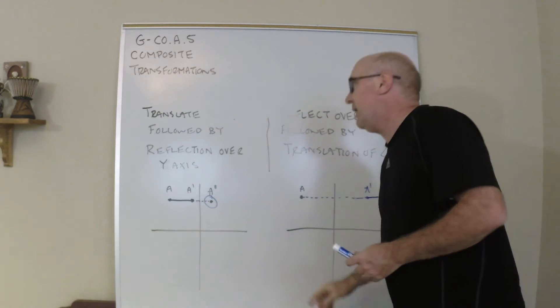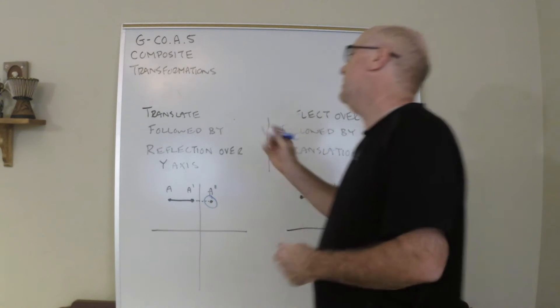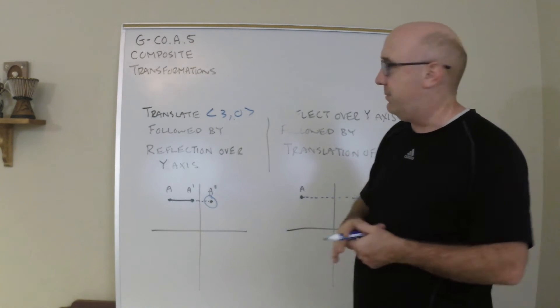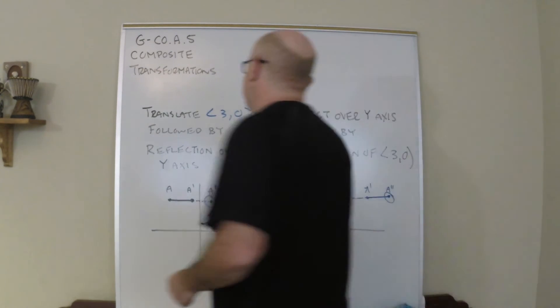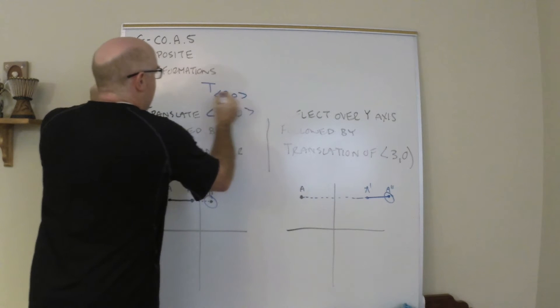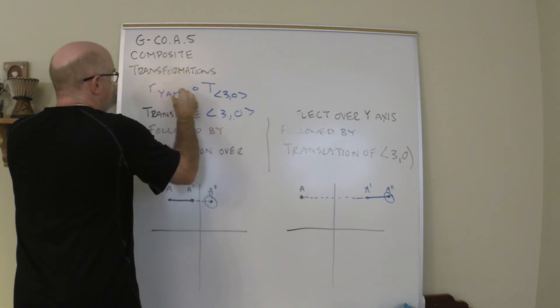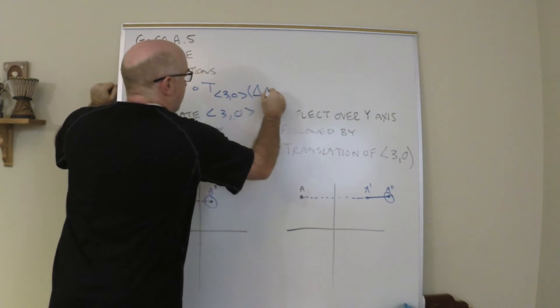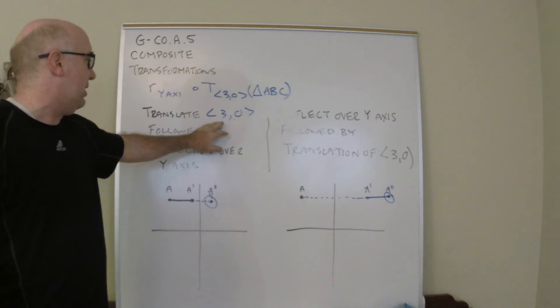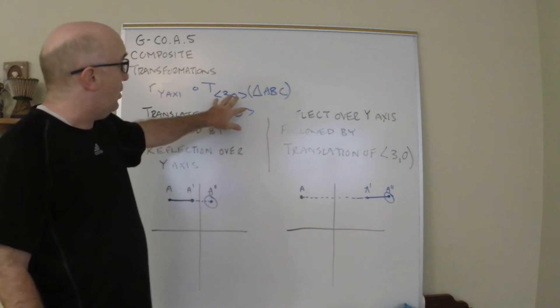Before I do that, I want to talk about notation a little bit here. Notation written in a composite manner comes in two forms. It can be written like this, or it can be written in a composite format. So let me show you what that would look like. Now this would be the notation that we would use to translate by <3,0> followed by a reflection over the y-axis.